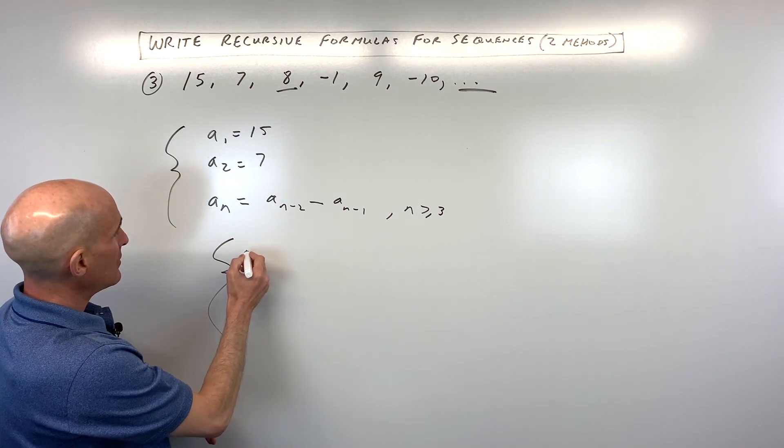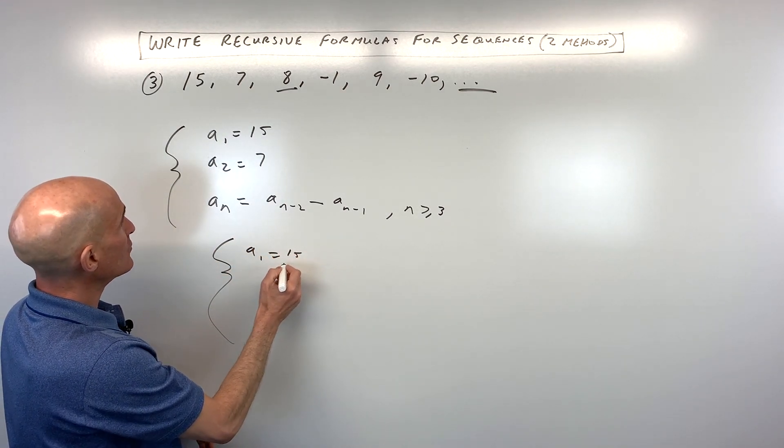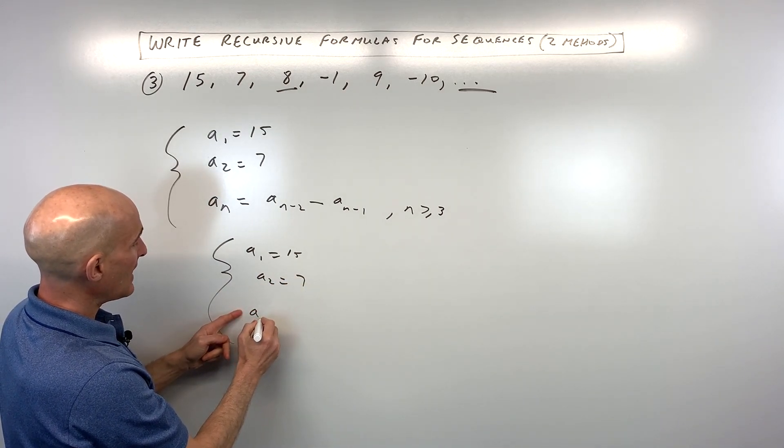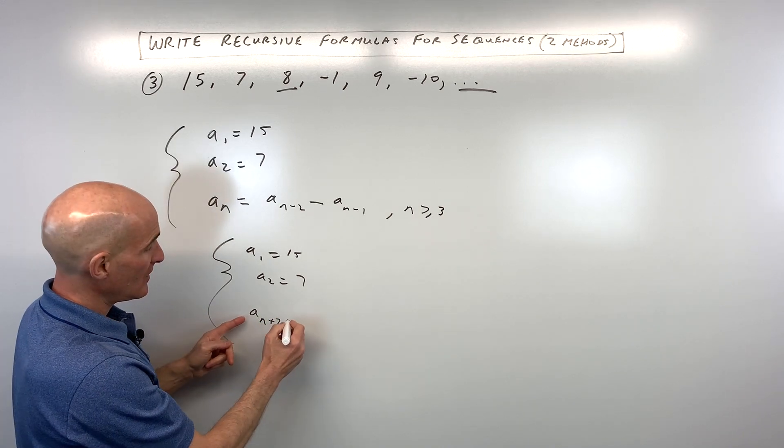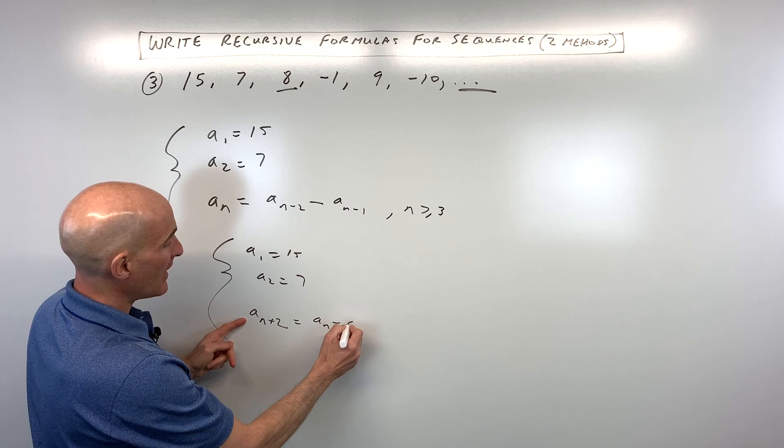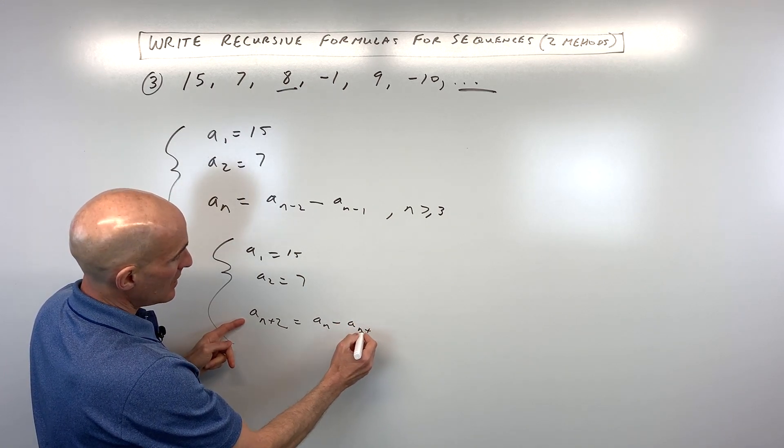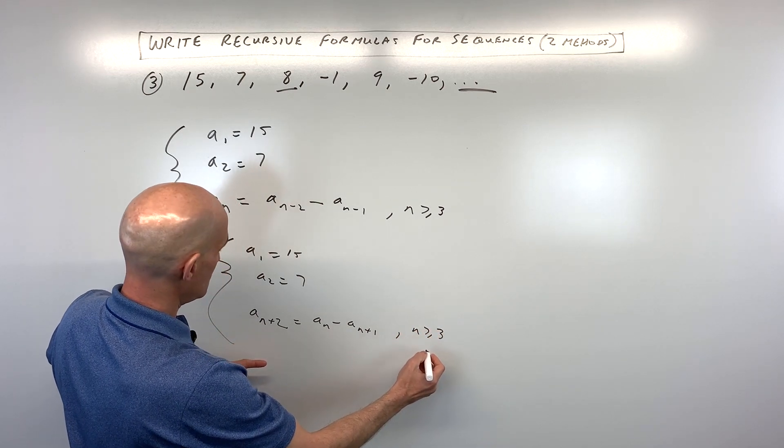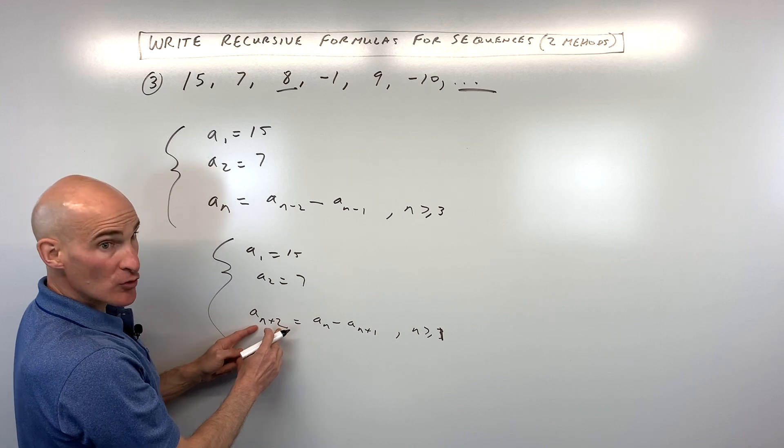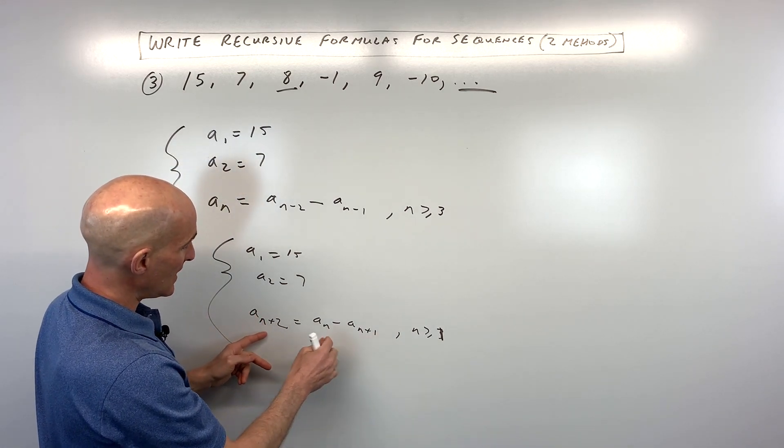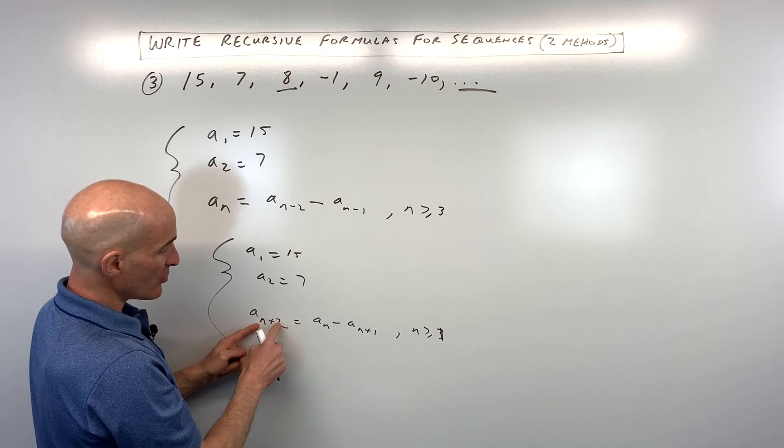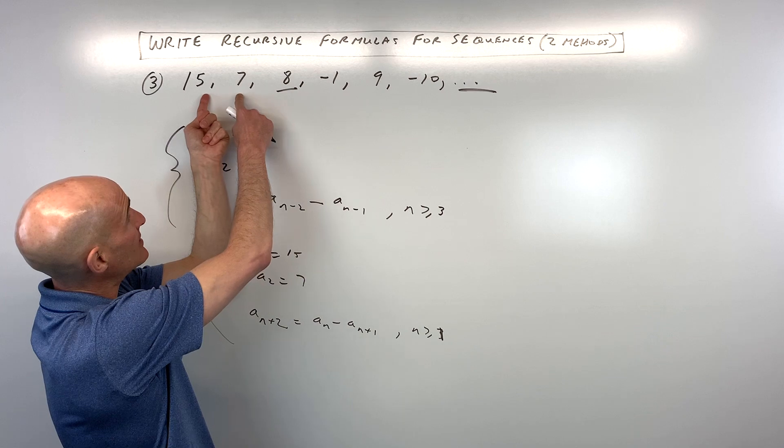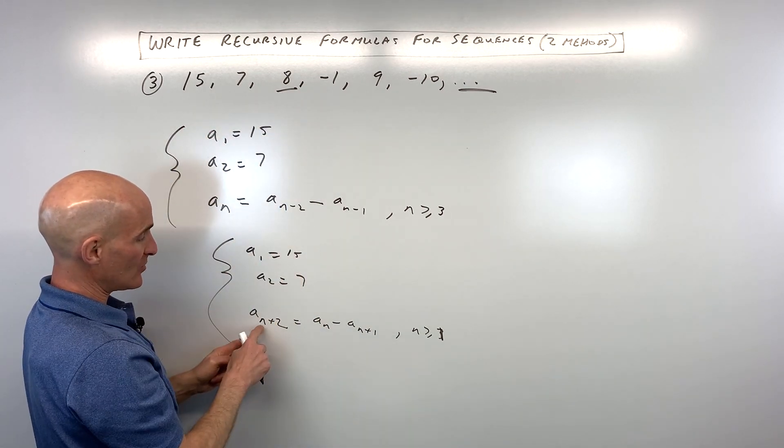The other option is, again, we could say a1 equals 15, a sub 2 equals 7. This is the second term. And then we could say a sub n plus 2 equals a sub n minus a sub n plus 1. And that's going to be when n is greater than or equal to 1. So 1 plus 2 would be 3. This would be to find the third term. So what we're doing is we're taking, so when n equals, let's say 1, to find the third term, you're taking the first term, which is 15, minus 1 plus 1, which is the second term, that's 7. 15 minus 7 equals 8, which is the third term.